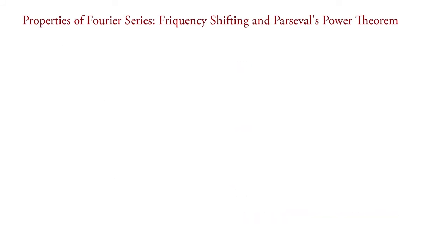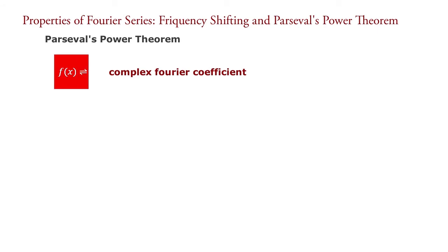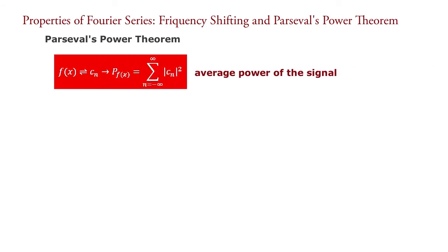Second, Parseval's power theorem. Parseval's power theorem states that for a Fourier signal f(x) with corresponding Fourier coefficients C_n and period 2π, the average power of the signal f(x) is given by P of f(x) equals the summation from n equals minus infinity to infinity of the modulus of C_n squared.